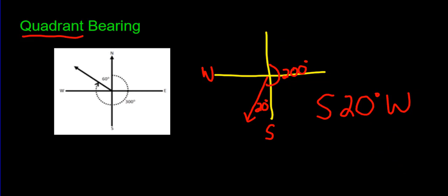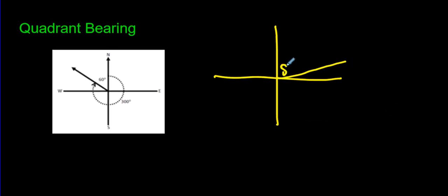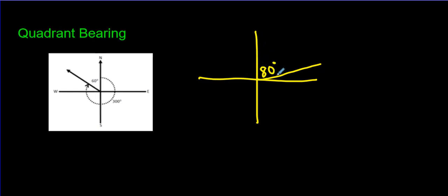Let's try one right here. Let's say the true bearing was 080 degrees, or 80 degrees. What would the quadrant bearing be? Well, it would be north, 80 degrees, east.